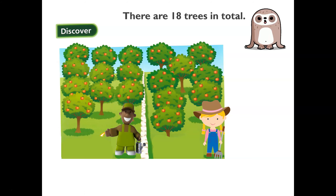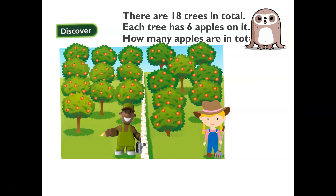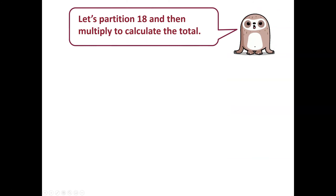Here we are posed a question by Greg. We are told there are eighteen trees in the orchard and that each tree has six apples on it. We need to work out the total number of apples, which means we need to calculate eighteen multiplied by six. Greg has given us a great idea: let's partition eighteen and then multiply to calculate the total.